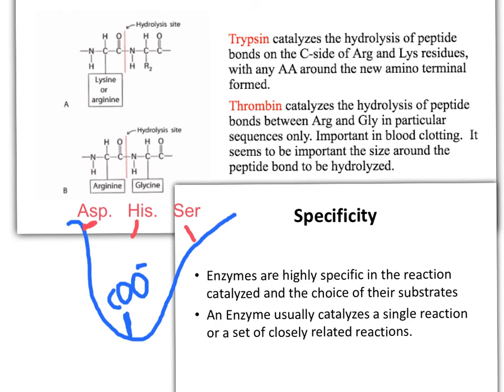However, thrombin is more specific because it will only hydrolyze when the arginine amino acid is neighboring to the glycine amino acid, which is recognized as a small amino acid.